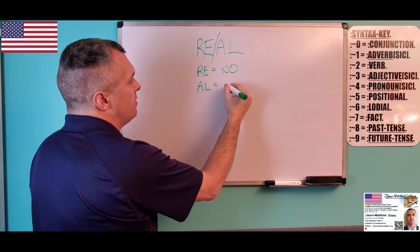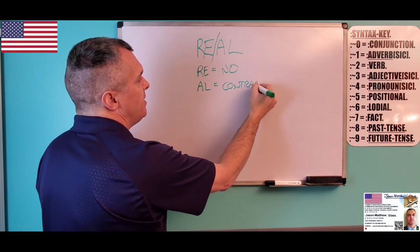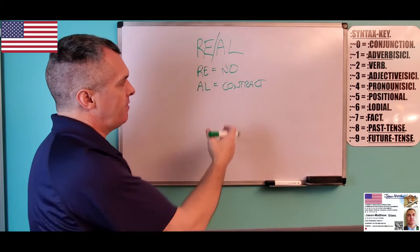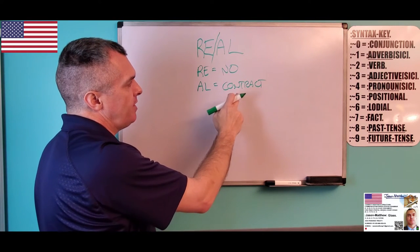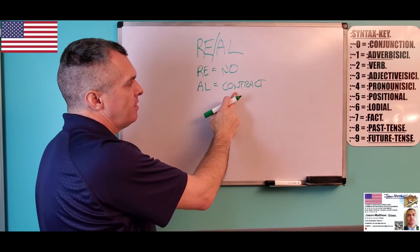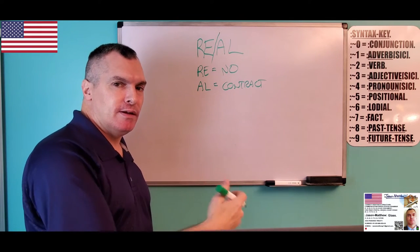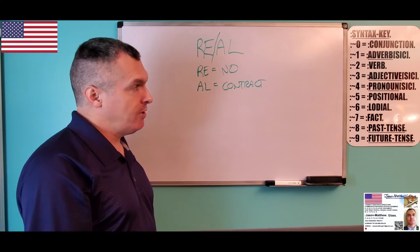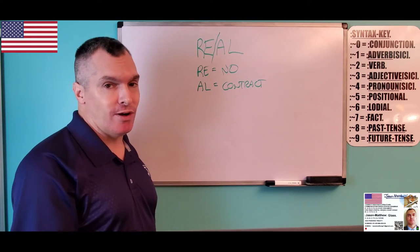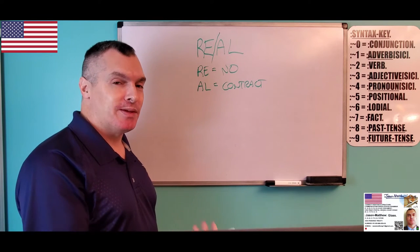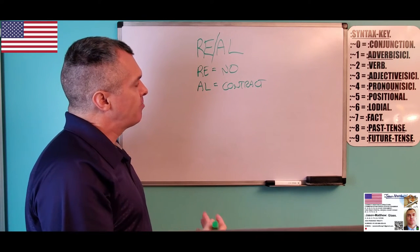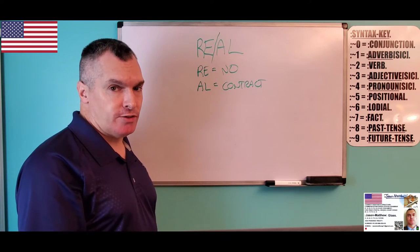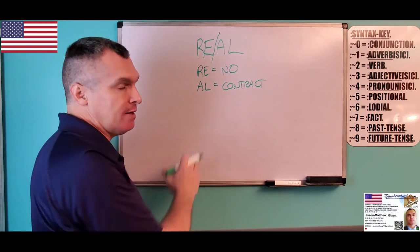A, L is a word forming element, which means contract. So we have a particle of negation, and then we have a contract at the end of the word. We have a tangible contract with what a contract is, and we have a tangible contract with what no contract is, it's based on fact, fact-based. Therefore, real is tangible contract, based upon the Parse I've just shown you here.